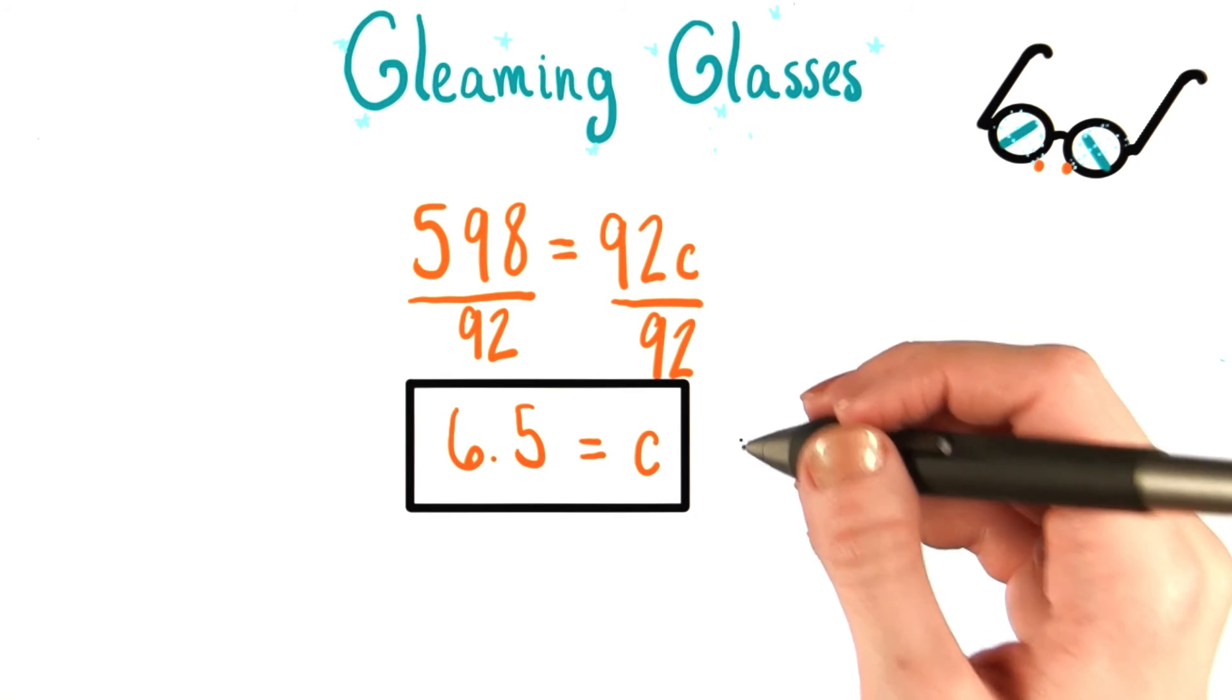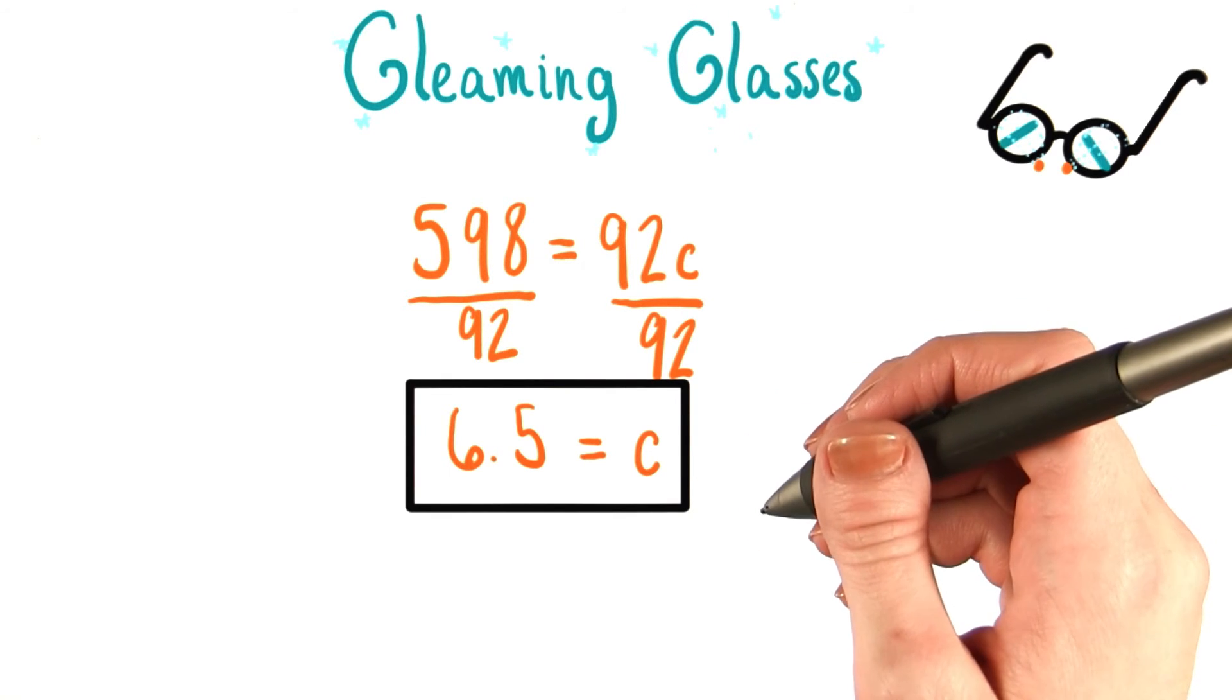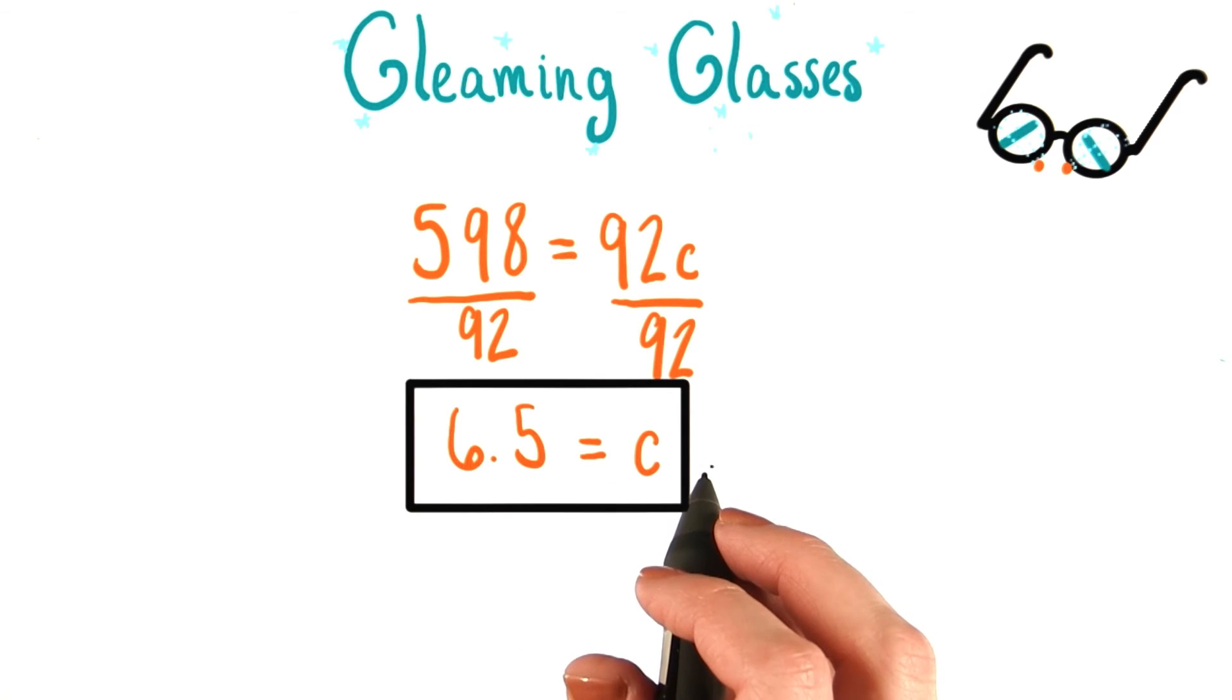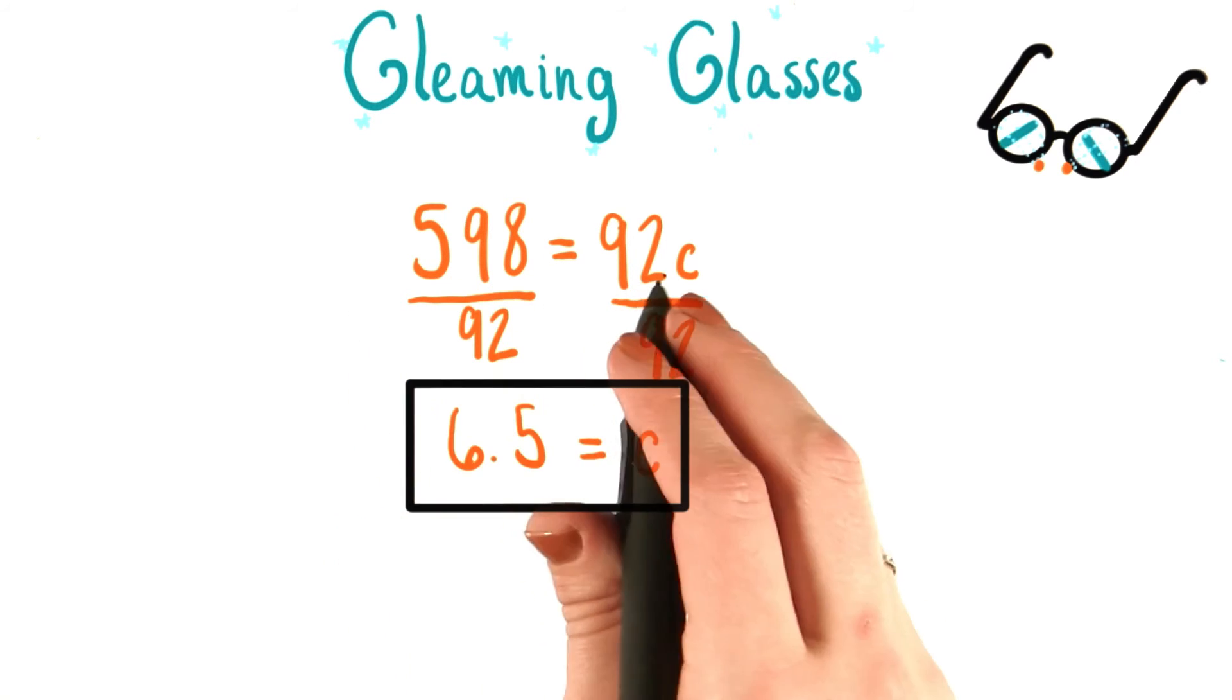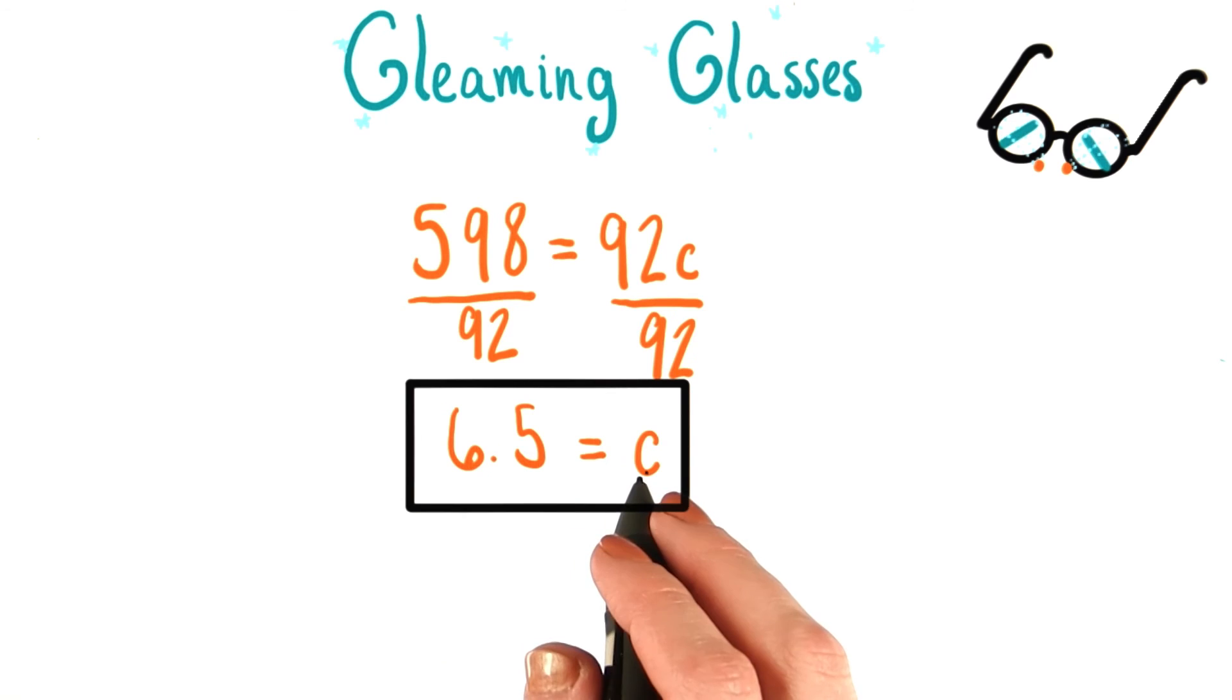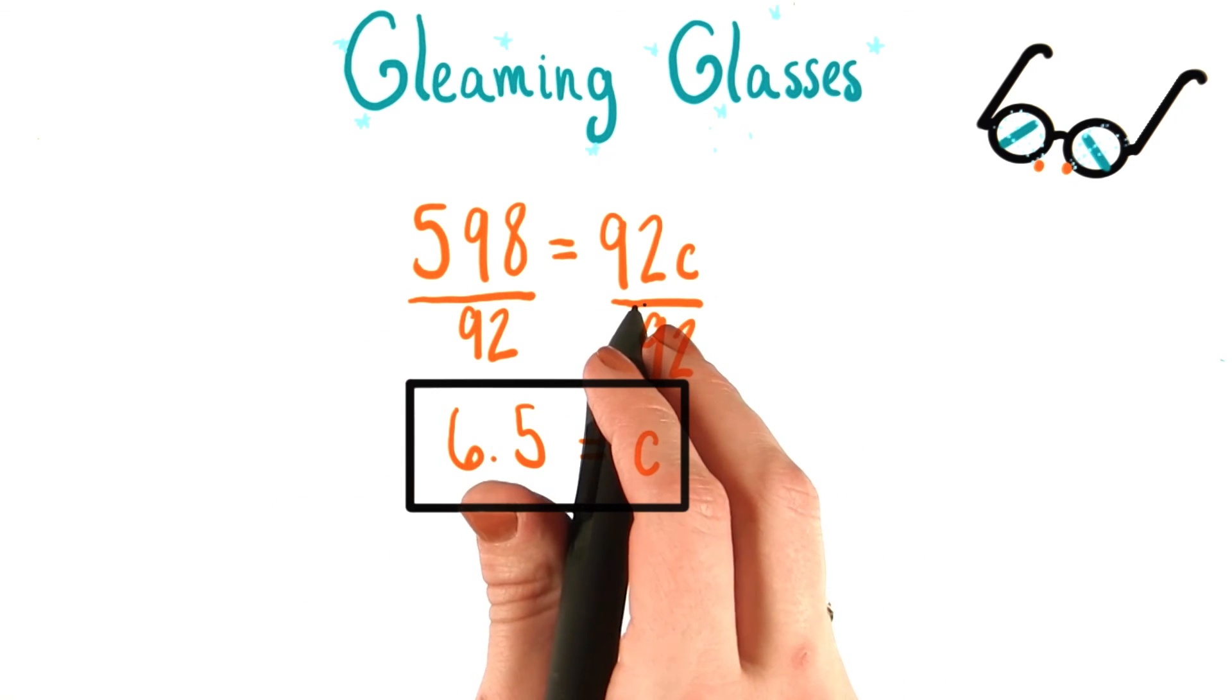Just to be safe, it's always a good idea to check your answer if you know how to. In this case, we can just do substitution. Starting with our initial equation, 598 equals 92c, we can plug in our new value for c and see if this makes a true equation.